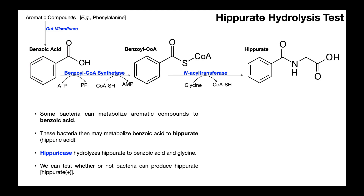Around a bacterial cell, there are going to be compounds floating around that are aromatic compounds. An example would be the amino acid phenylalanine. Some of these bacteria, some of which may exist in the microflora of the intestines, can actually take these aromatic compounds and break them down into benzoic acid.